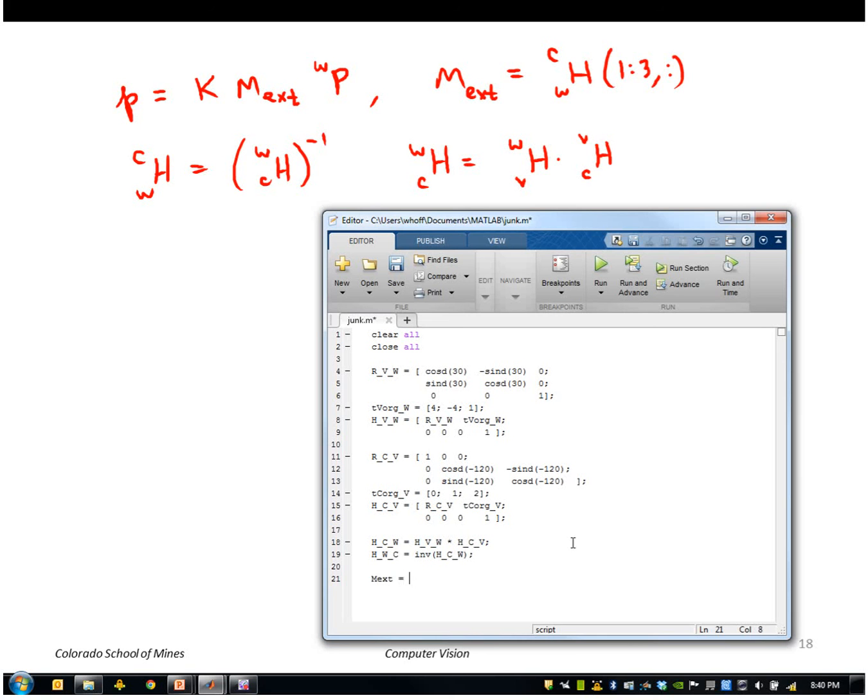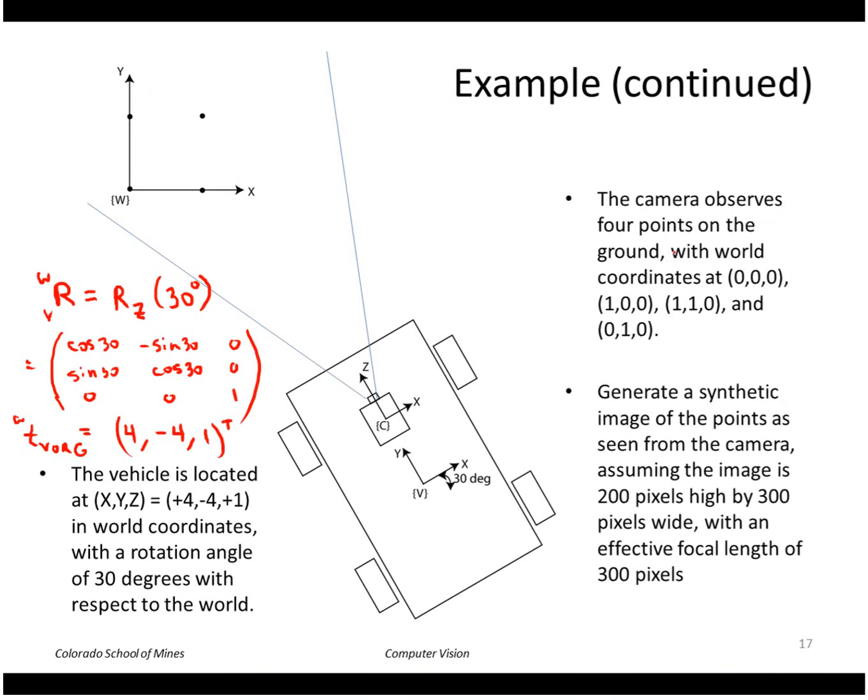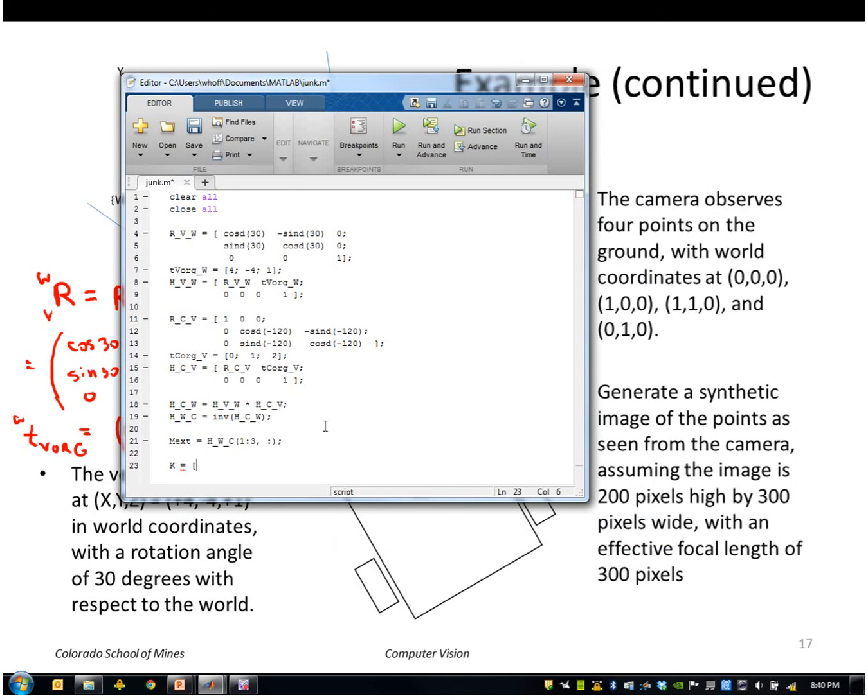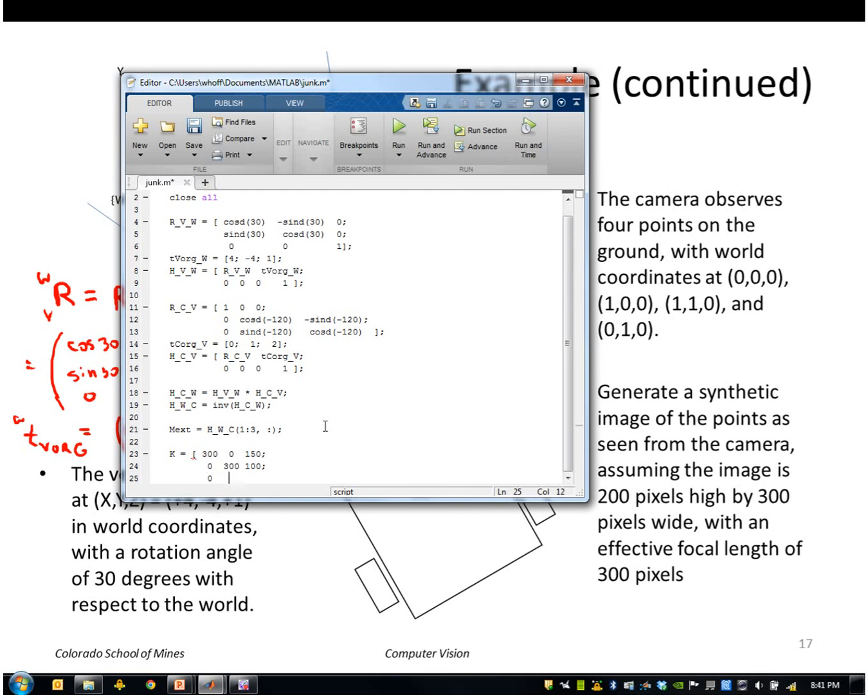Now I can extract the external extrinsic camera parameter matrix from the world to camera. I'm going to need a K matrix. The image is 200 high by 300 wide, focal length of 300. So focal length 300, middle of the camera I'll assume is Cx, so that's 150. The middle of the camera in the Y direction would be 100.